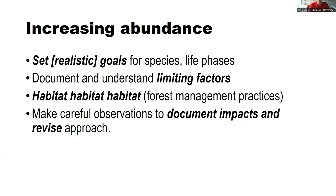If you want to increase abundance, set realistic goals for species and life phases — breeding wild turkeys, or wintering northern bobwhites, things you can achieve. Then understand what limiting factors are limiting your achievement of those goals. Do northern bobwhites have enough food for the winter? Do they have enough shelter? Are they arranged in a way that promotes their survival? Then we start to manipulate habitat. Make careful observations, document your impacts, and revise your approach.